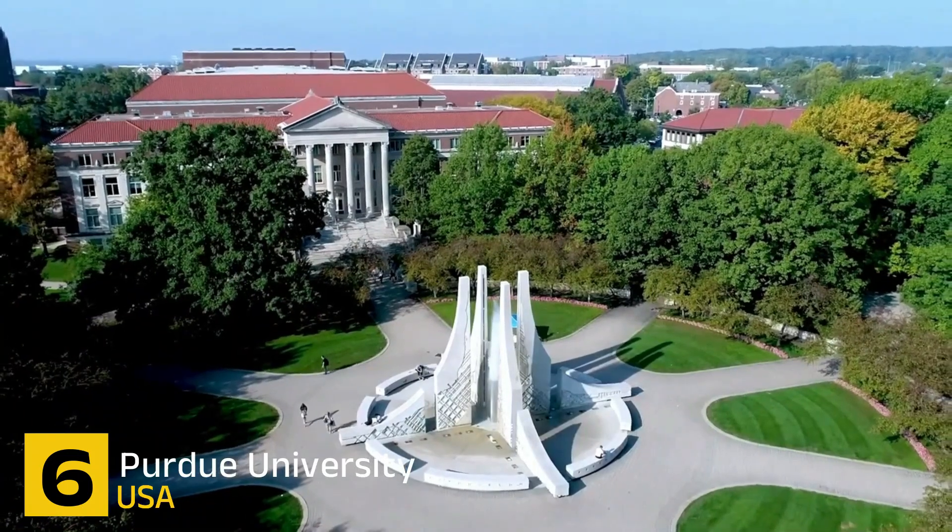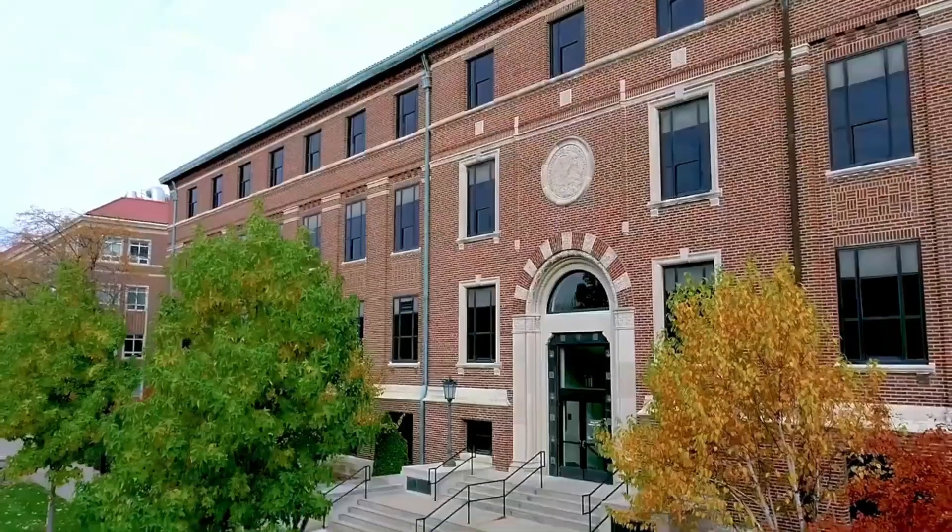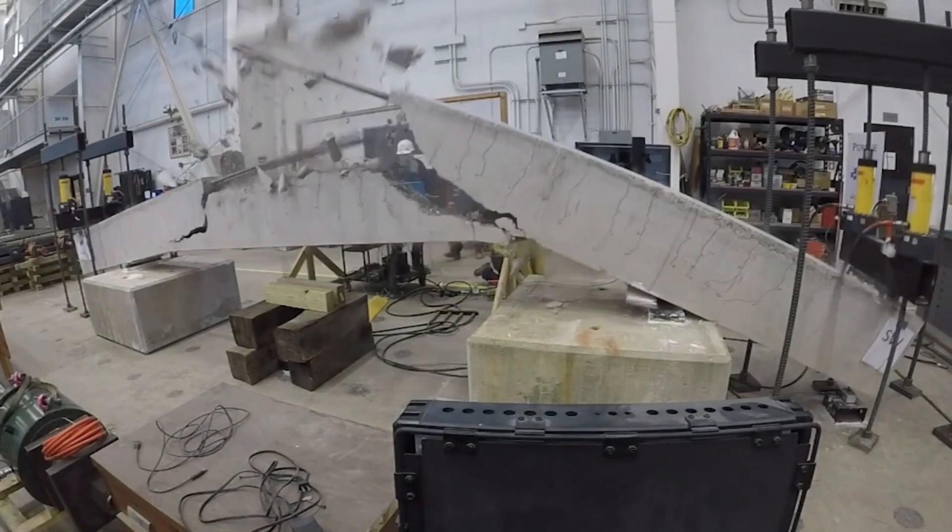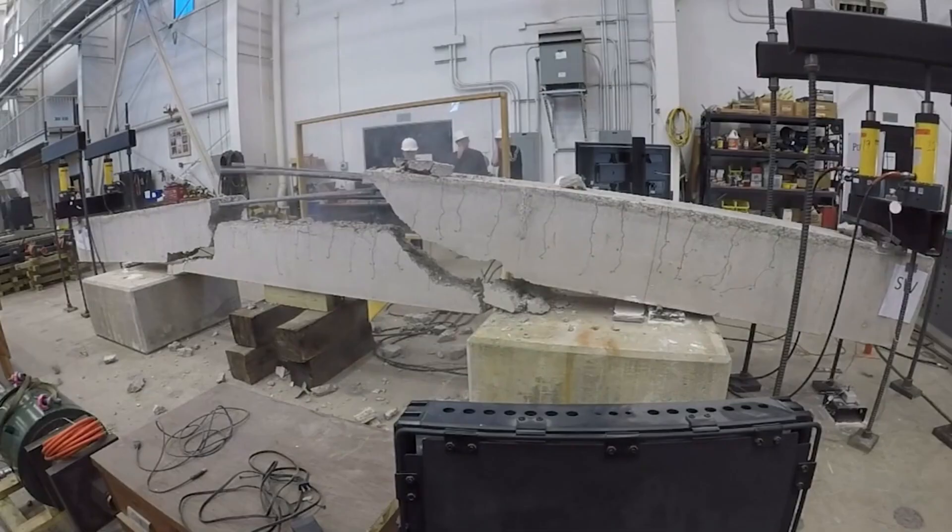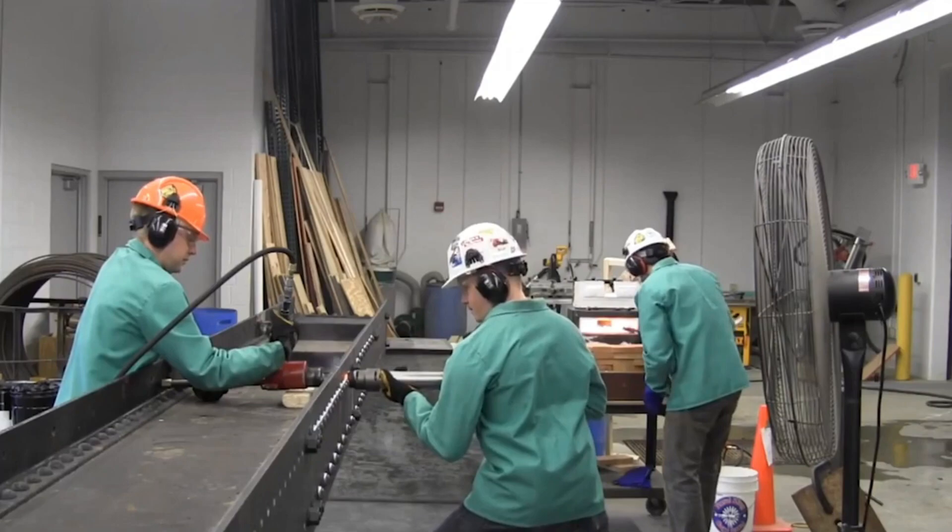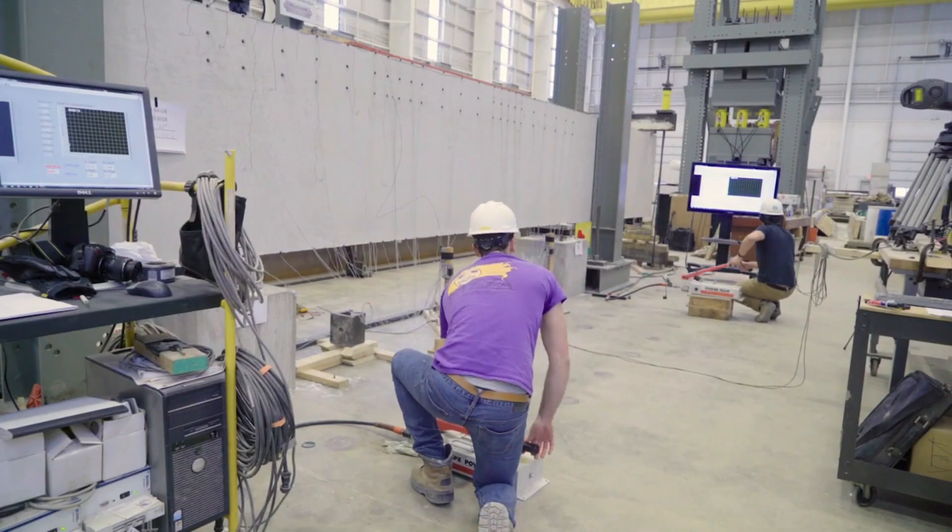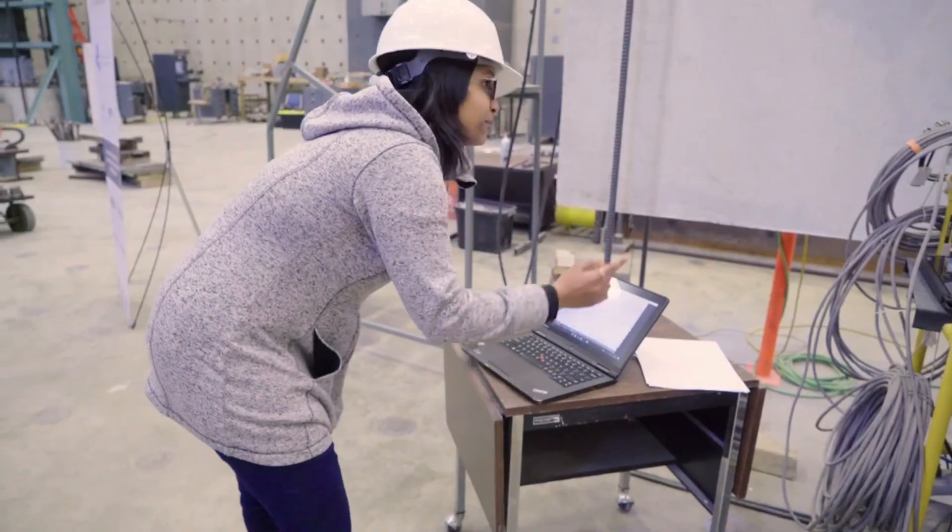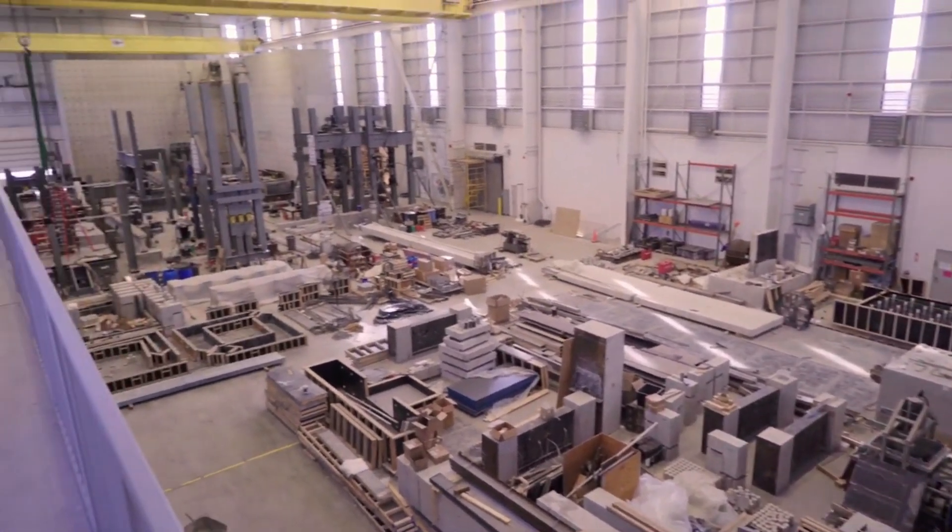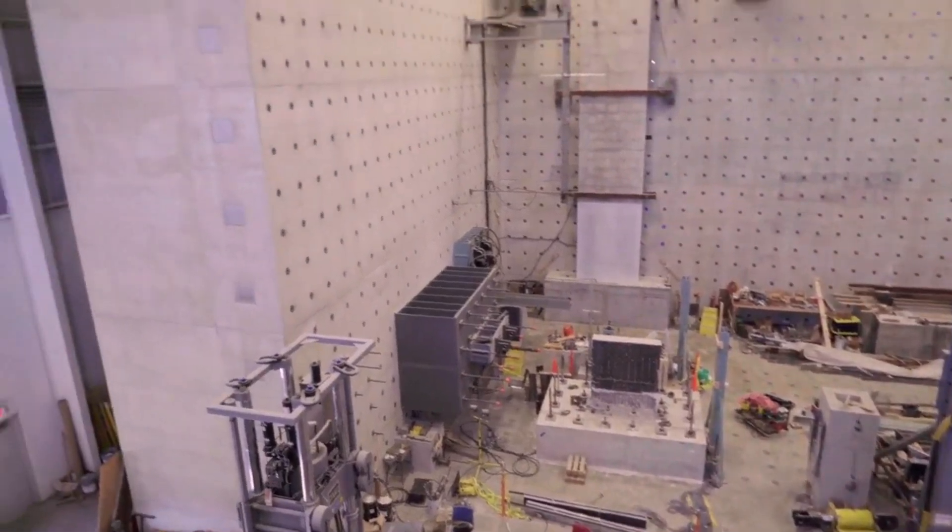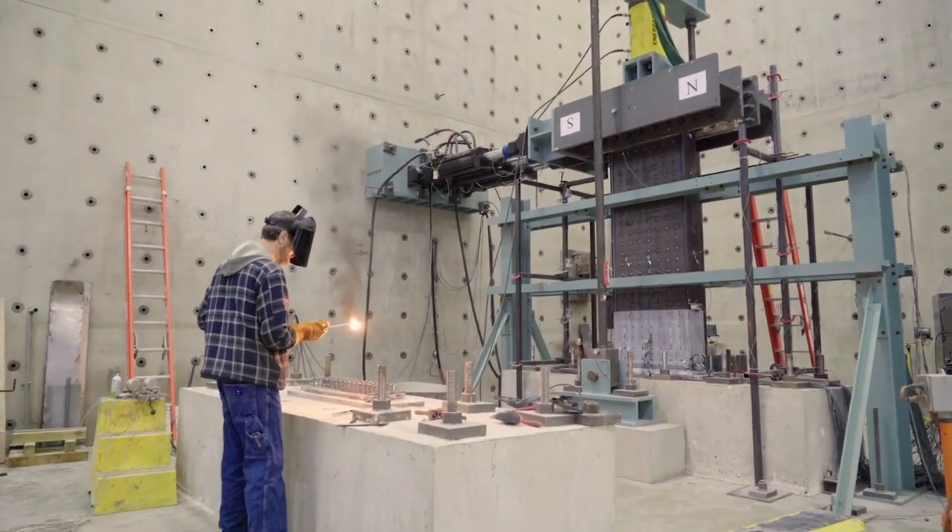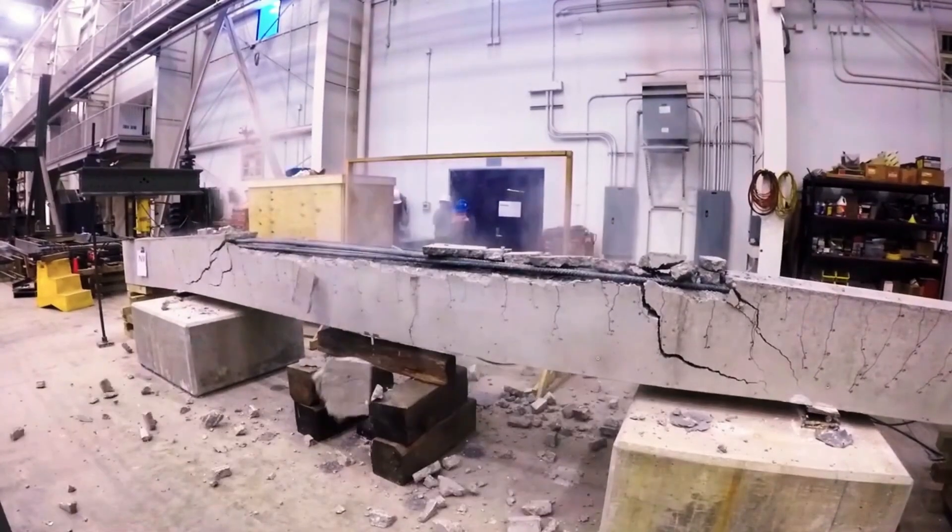Number 6. Purdue University. Purdue University, located in West Lafayette, Indiana, holds a prominent position in global rankings, coming in at number 17. The institution is particularly celebrated for its robust engineering programs which span various disciplines. These programs are further amplified by the university's strong connections with industry leaders. This collaborative relationship ensures that the curriculum remains relevant to contemporary practices and that students gain valuable exposure to real-world applications within the engineering sector.